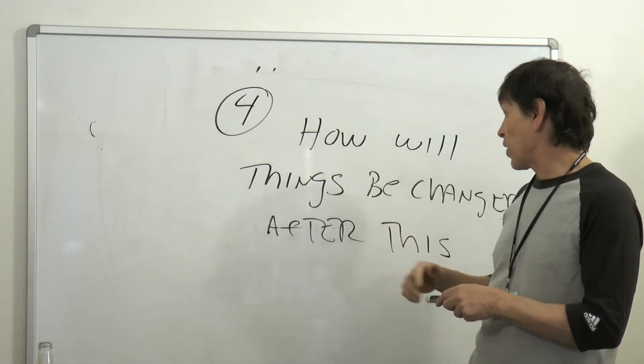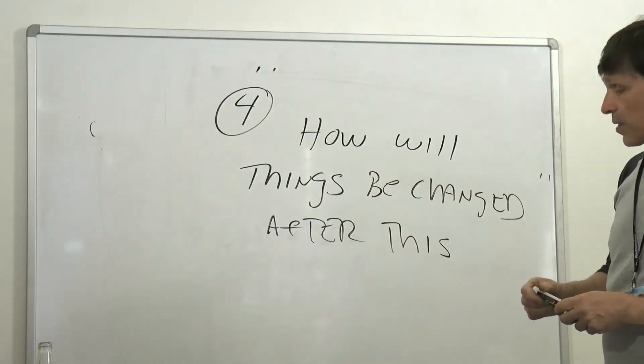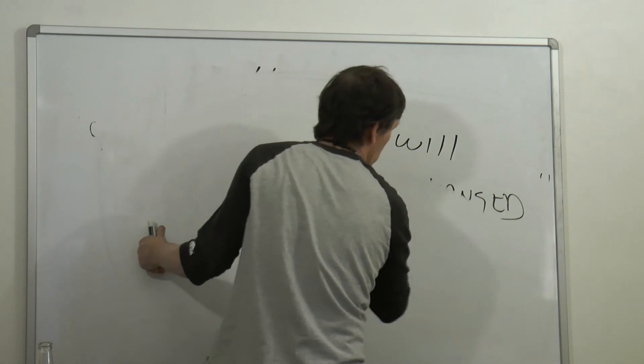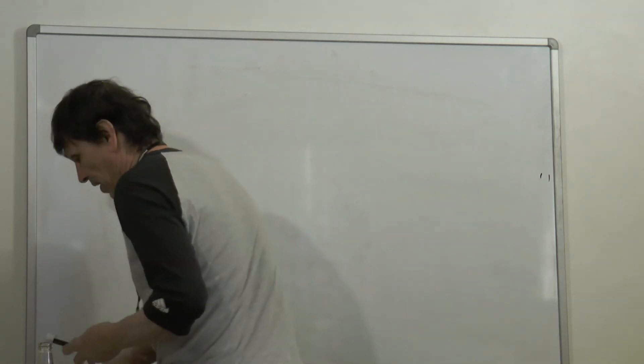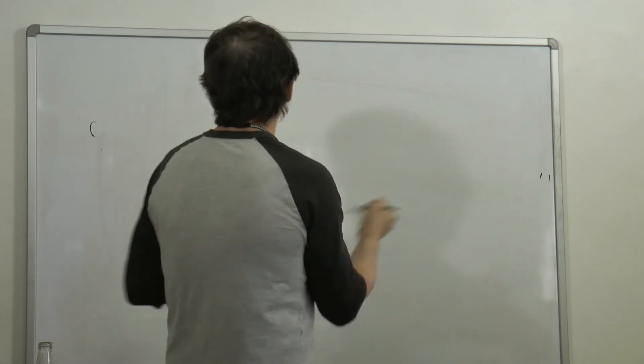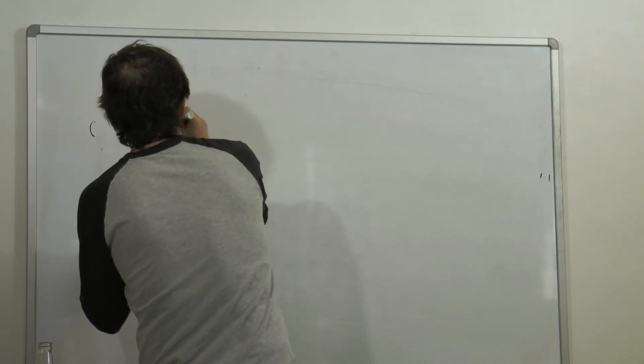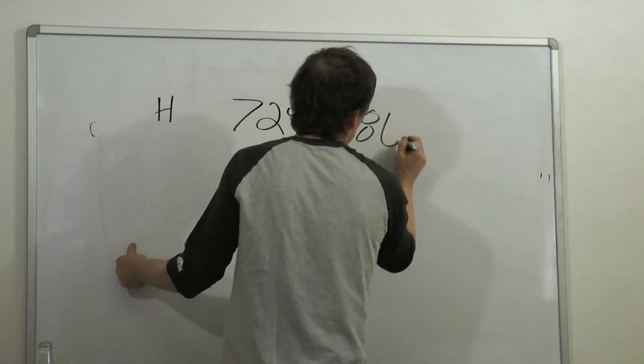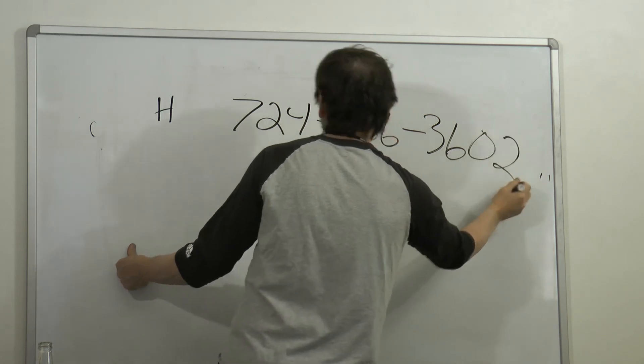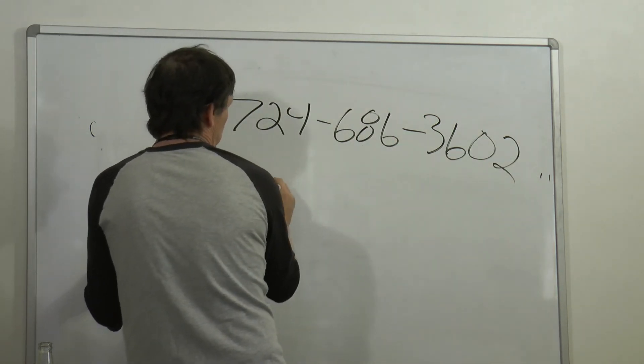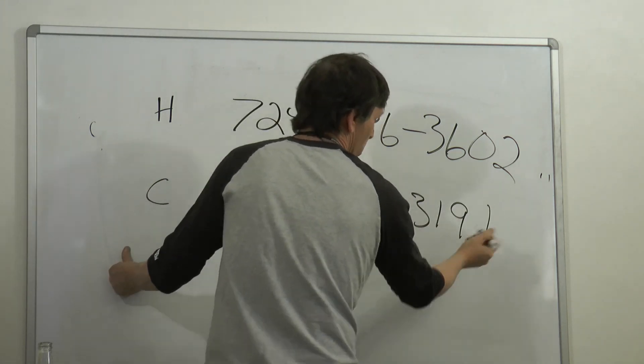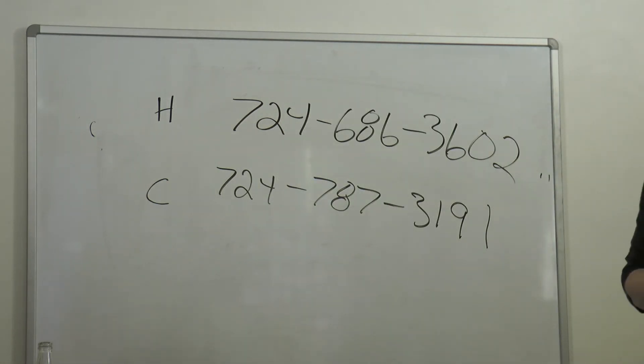That's the fourth one - how will things be changed after this? Now what I'm going to do, in case you've lost it, I'm going to give you just my regular old phone and cell phone number. If you want to text me or if you want to actually talk to me, that would work. Home is 724-686-3636, and cell 724-787-3191. If you need to or want to get a hold of me that way, that's fine. Either of those are great.